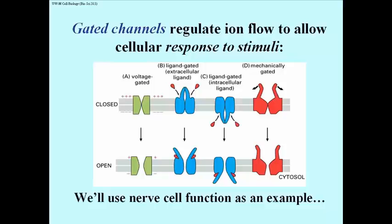We have ligand gated intracellular and extracellular channels — we won't talk too much about those. And there's an example of a mechanically gated ion channel. We're going to look at nerve cell function as an example of how ion flow disturbs resting potentials and how that disturbance results in a response.